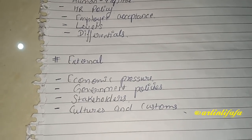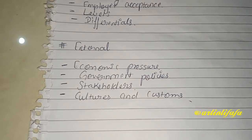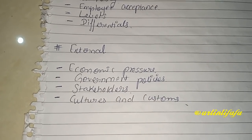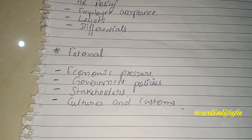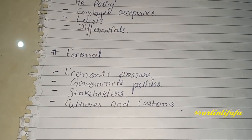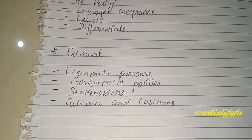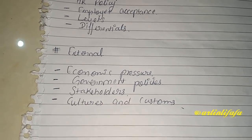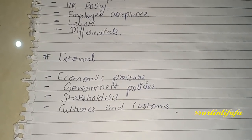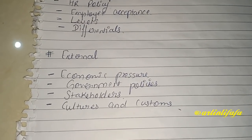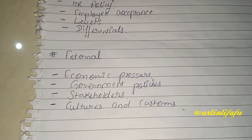External equity میں economic pressure دیکھتے ہیں کہ economy سے کیا pressure آ رہا ہے اور کتنی compensation set ہونی چاہیے۔ Government policies بھی دیکھتے ہیں — جیسے below poverty line کے لیے living standard اور minimum income کتنی fix کی ہوئی ہے۔ اس کے according compensation set کرنا ہوتا ہے اور stakeholders کیا چاہ رہے ہیں وہ بھی دیکھتے ہیں۔